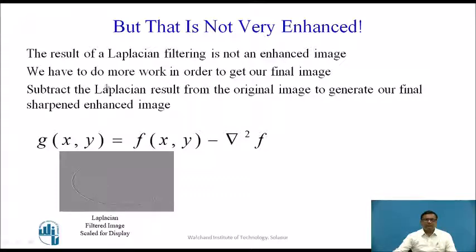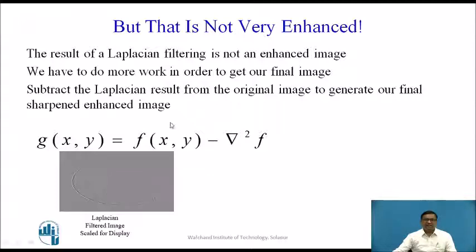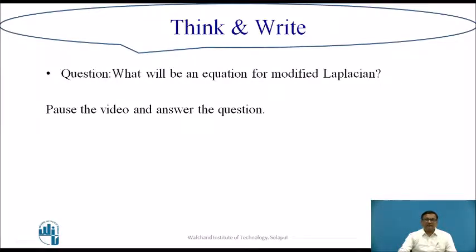To get the final sharpened enhanced image, we subtract the Laplacian result from the original image: g(x,y) = f(x,y) − ∇²f. With this modified Laplacian, we get a good quality image.